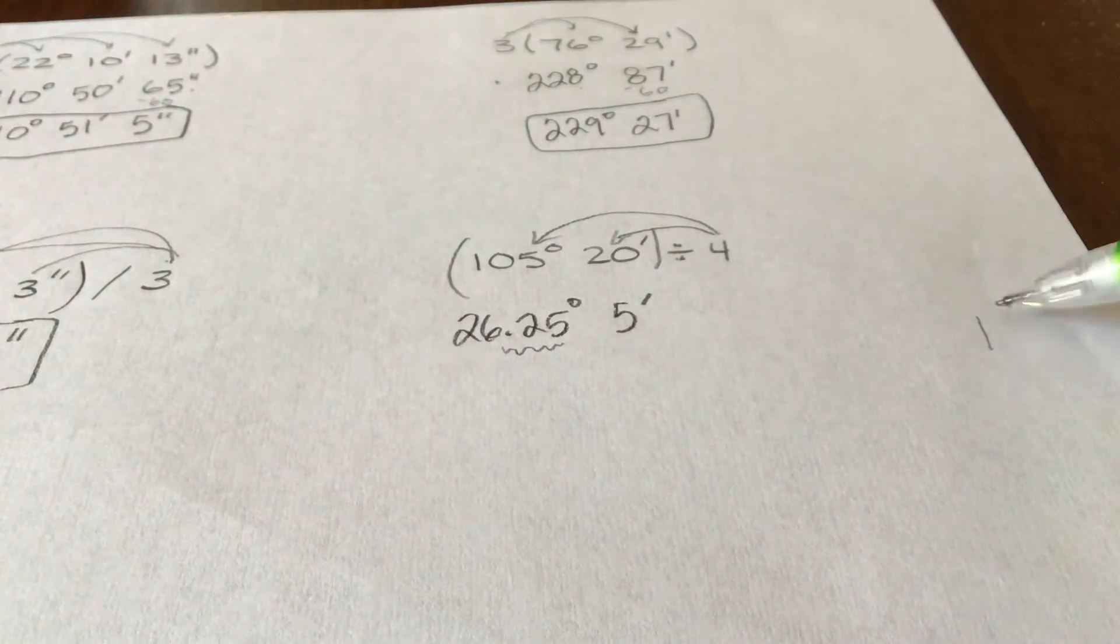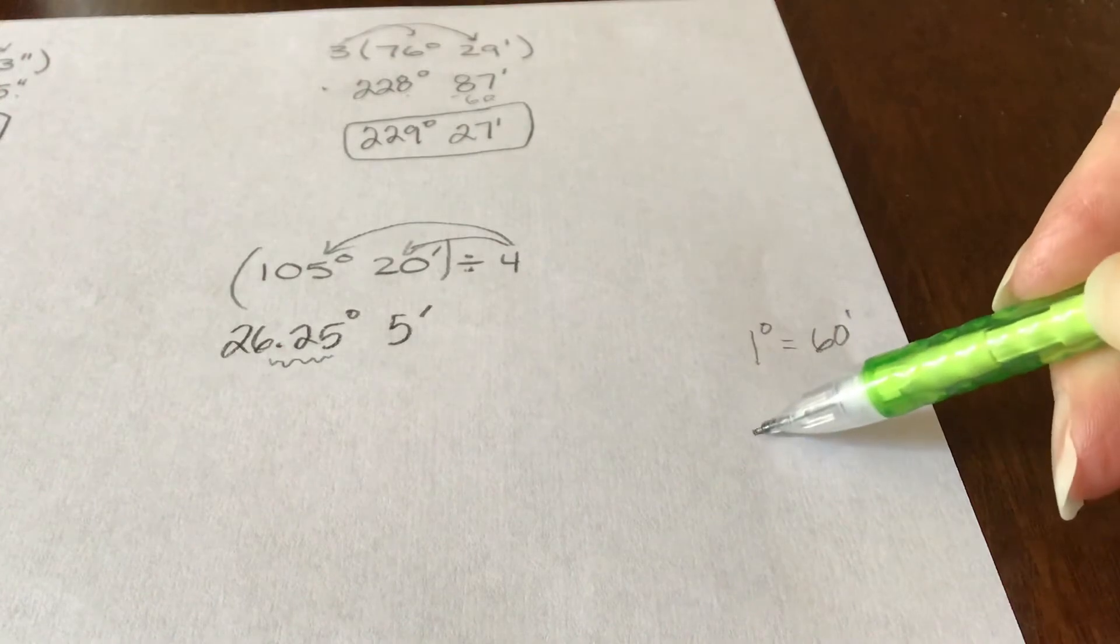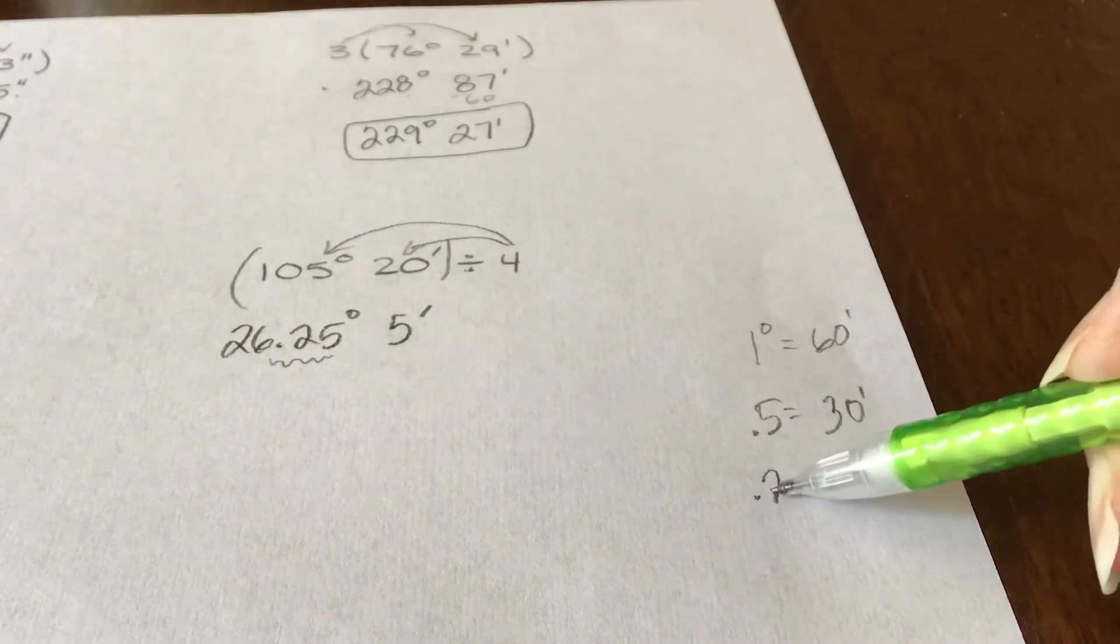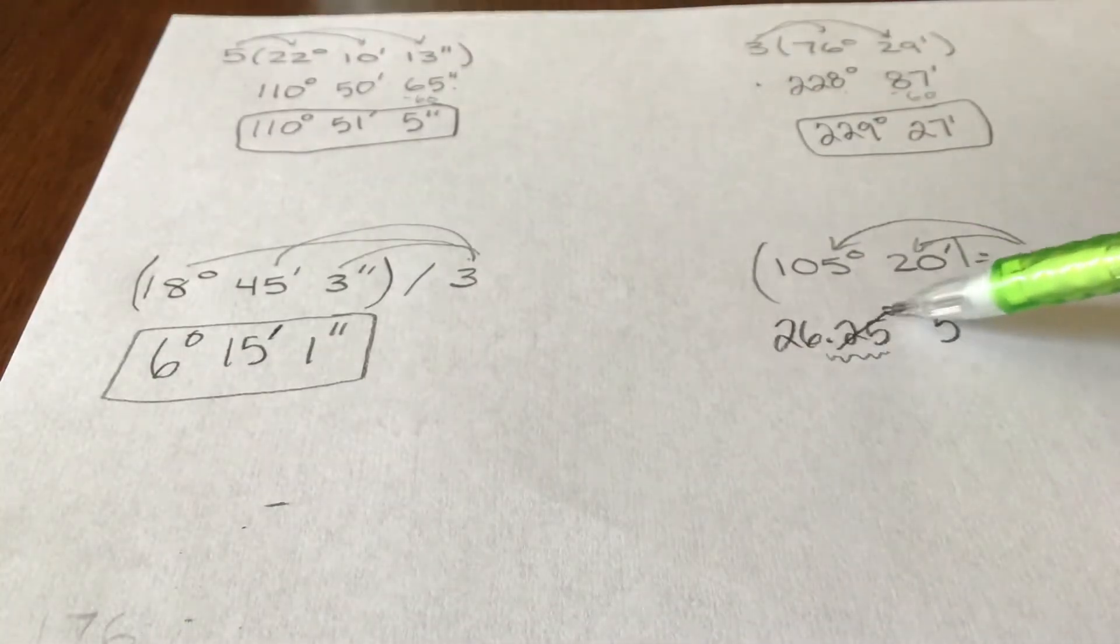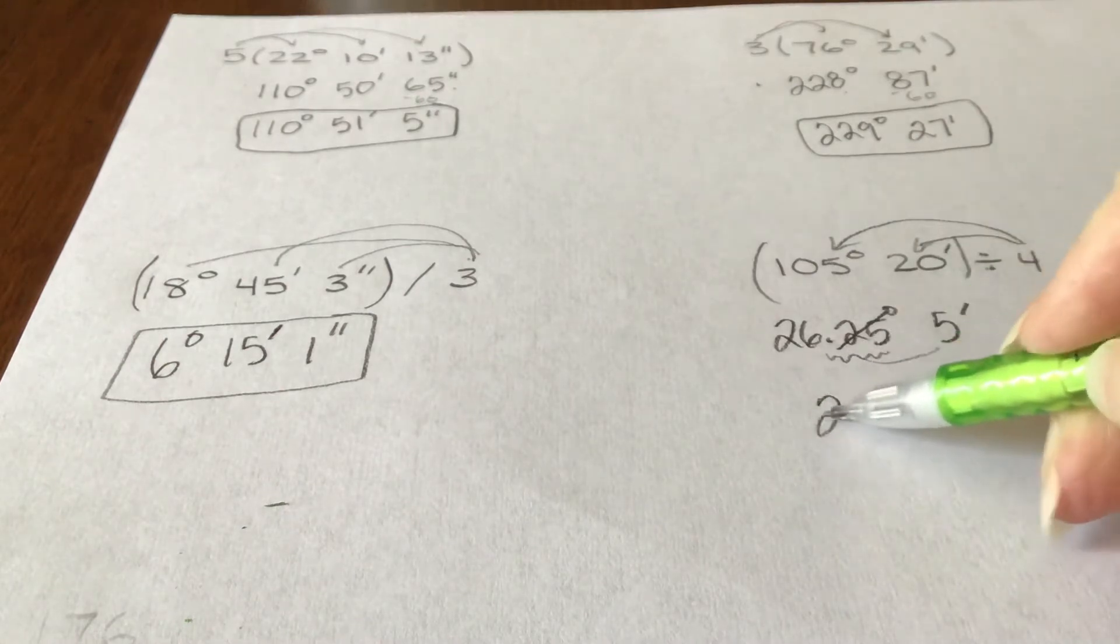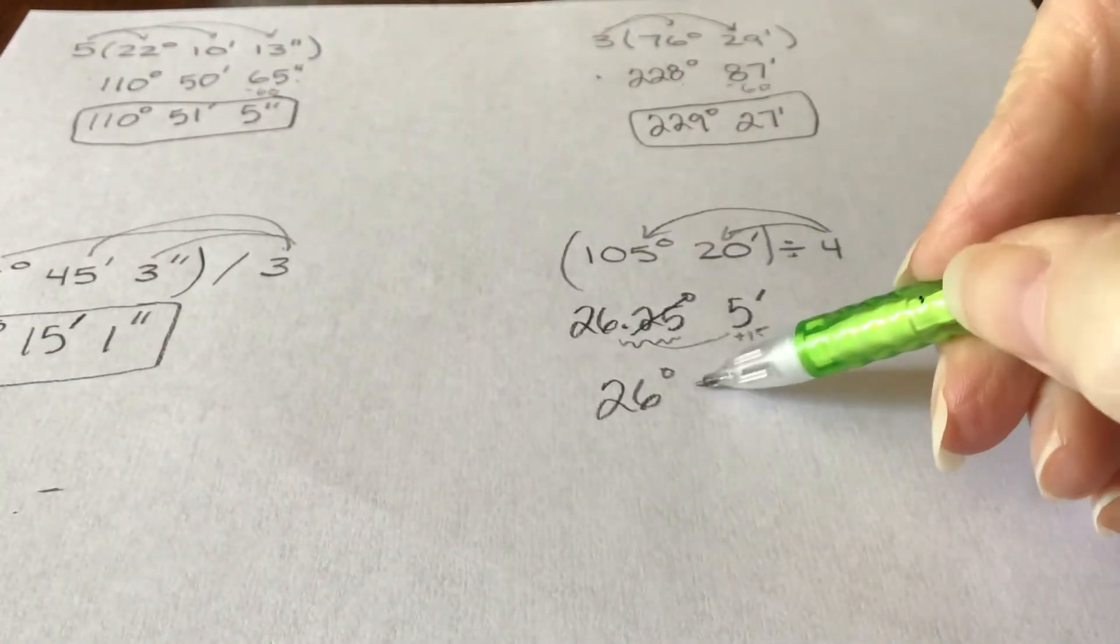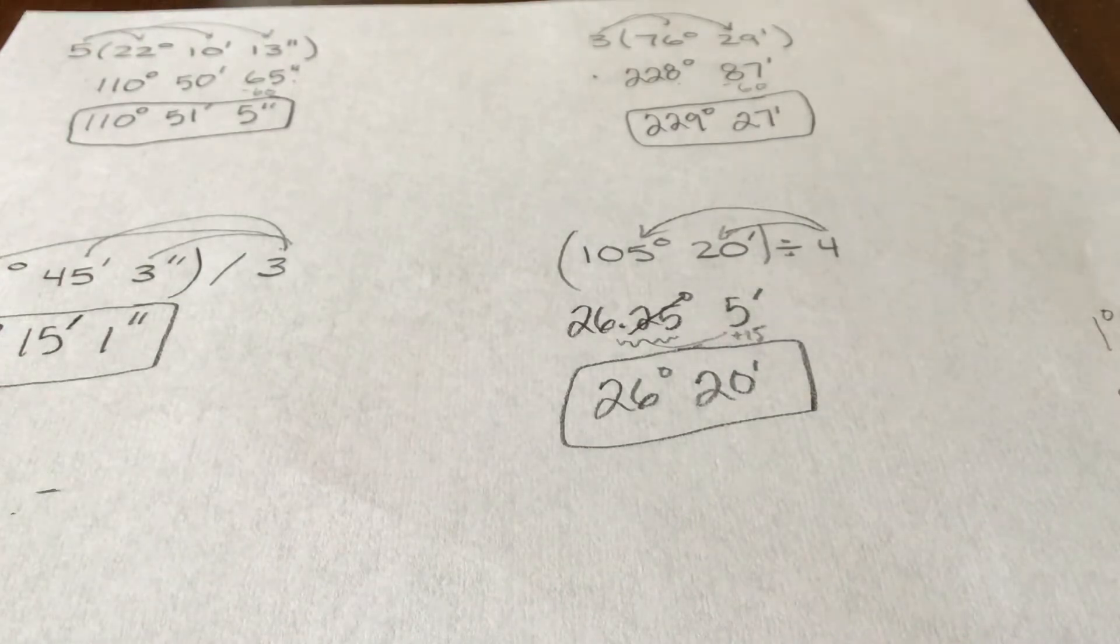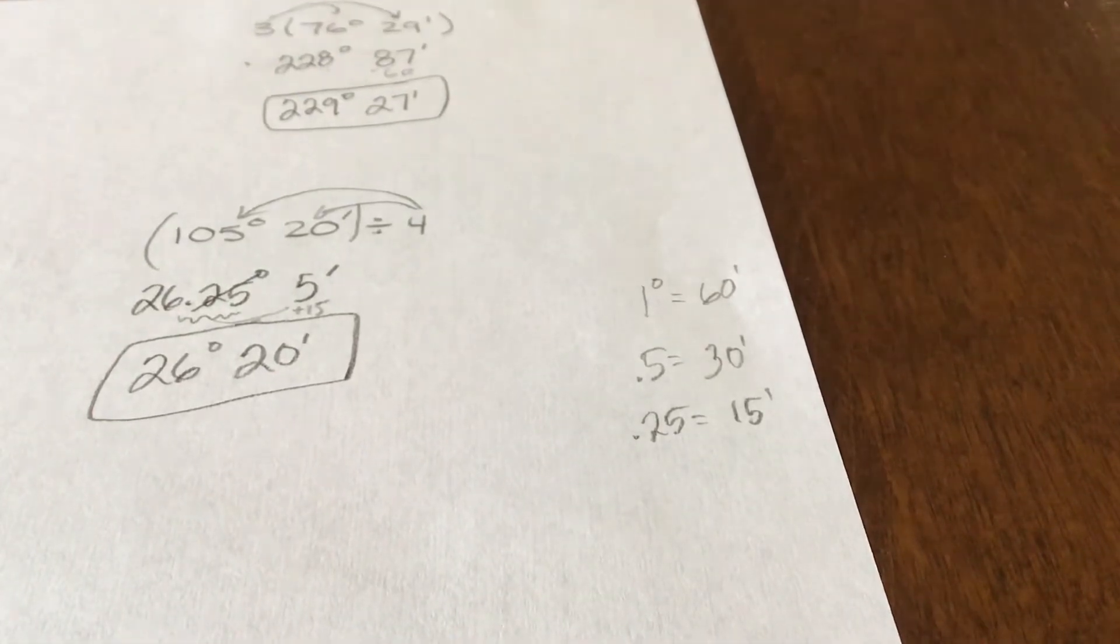All right, if we think about a degree, a degree is 60 minutes, right? Half of a degree would be 30 minutes. And then a quarter of a degree would be 15 minutes. So this quarter of a degree that we have, we're going to regroup it with our minutes. And it's going to end up being 26 degrees. And then we're adding that 15 onto there that we regrouped in 20 minutes. So we have to kind of think a little bit about what the decimals or what the halves, the quarters would be of a minute. And we can't regroup that one.